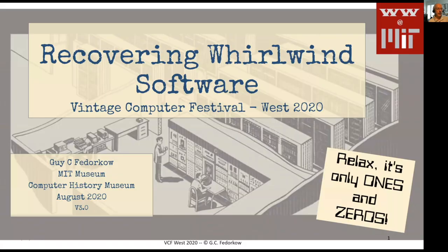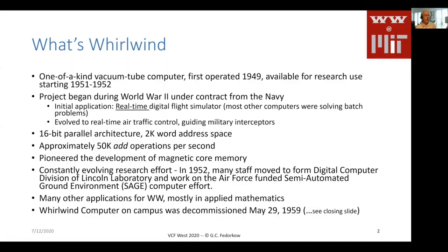This is about a machine called Whirlwind. We set about this project to try and recover some of the software from the machine that was first designed and run in 1949, early 1950. It's a one-of-a-kind vacuum tube computer that first came into operation in 1949 and was available for research use at MIT starting around 1951, running through the end of the decade.